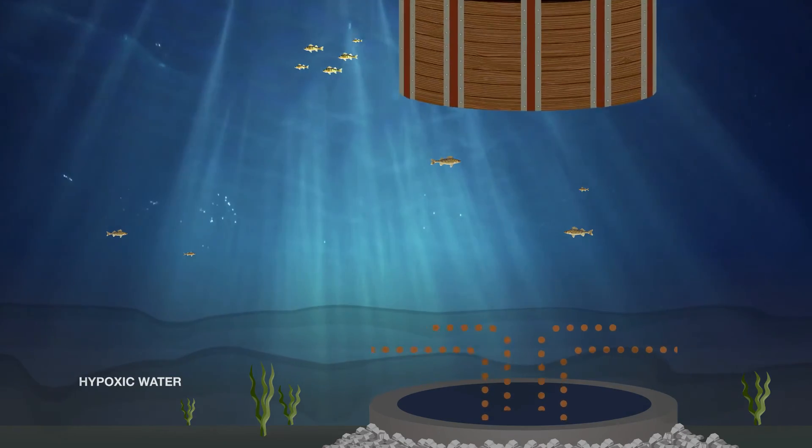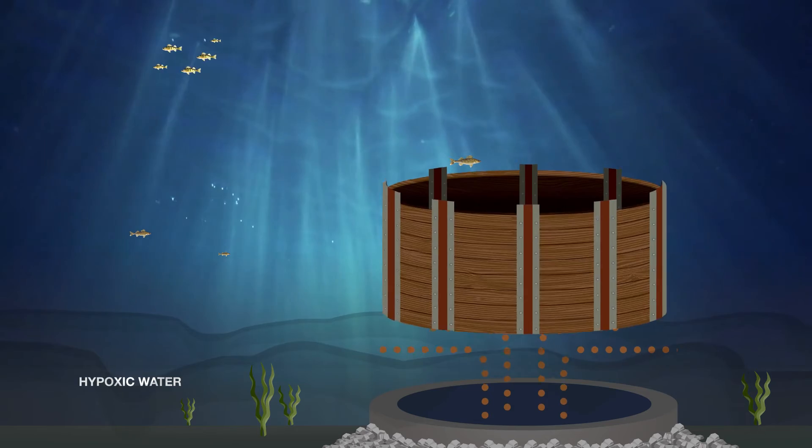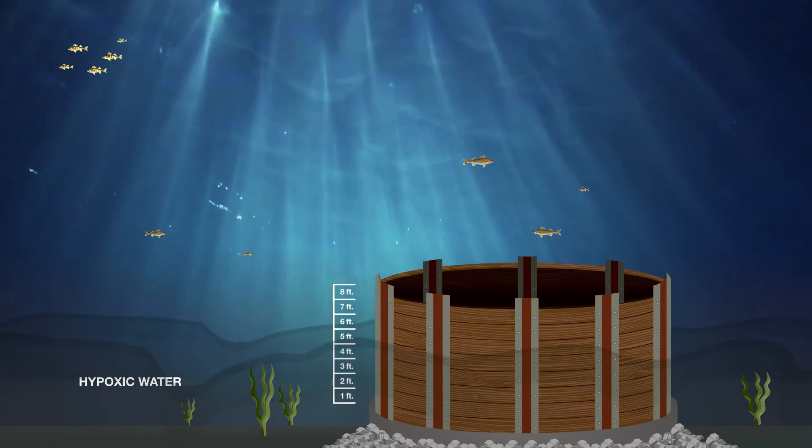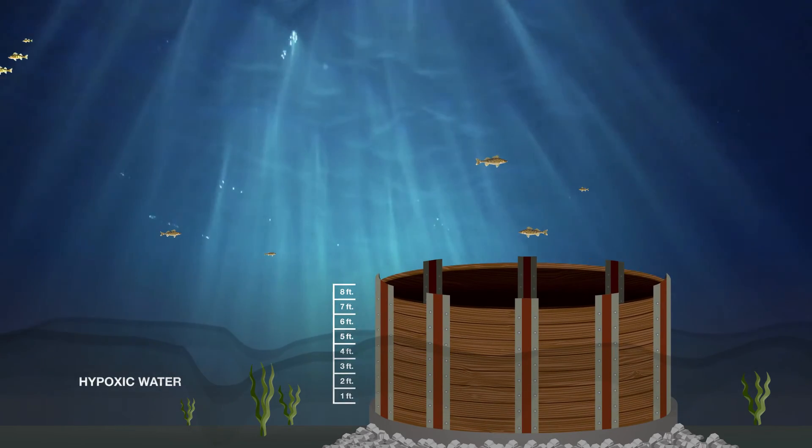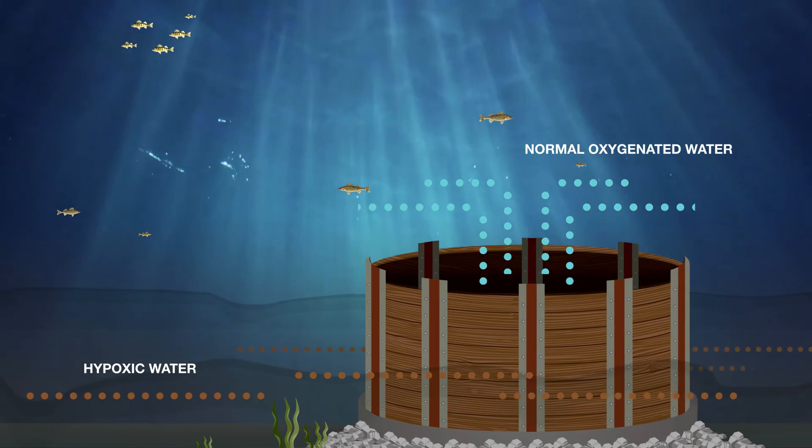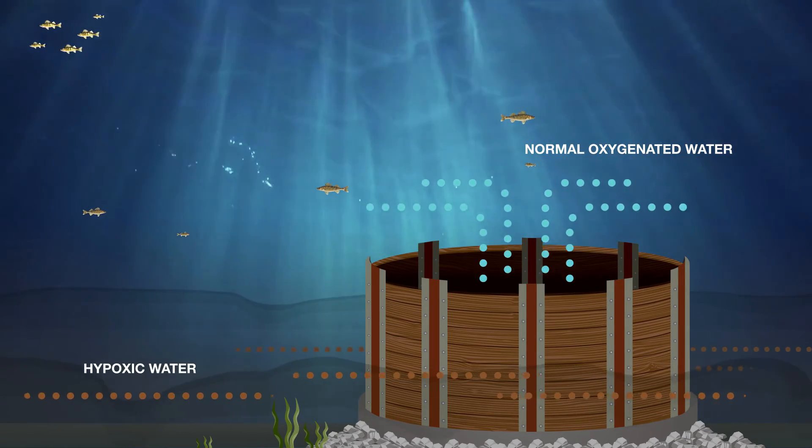Cleveland Water Engineers have developed a plan to keep hypoxic water out of the Nottingham intake by installing an eight-foot-tall ring on top of the Nottingham Crib. Once in place, the ring will keep the hypoxic water out of the intake.